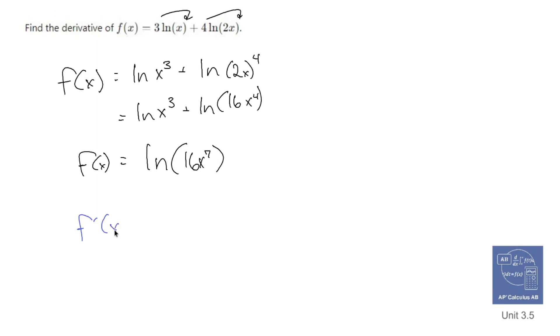f prime of x is going to equal 1 over, keep the inside stuff, 16x to the seventh, but multiply everything by the derivative of the inside stuff. So 7 times 16 is 112x to the sixth.